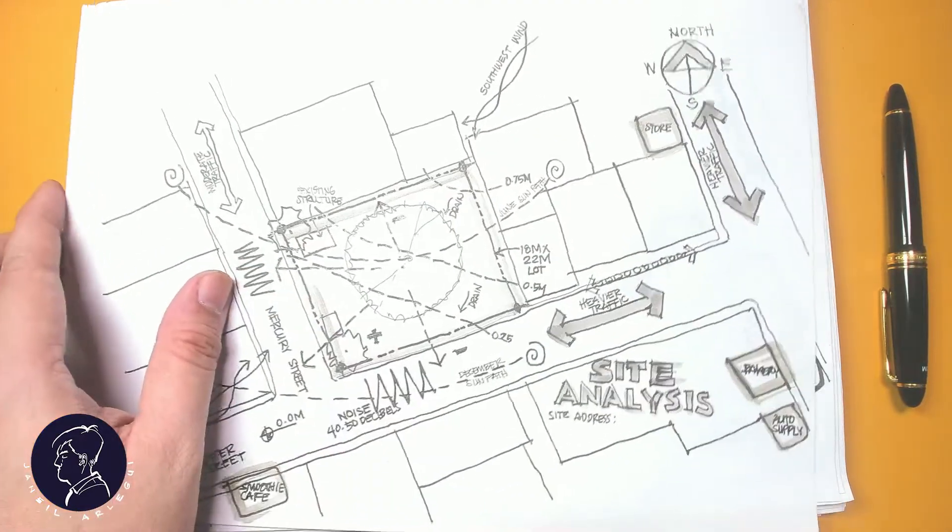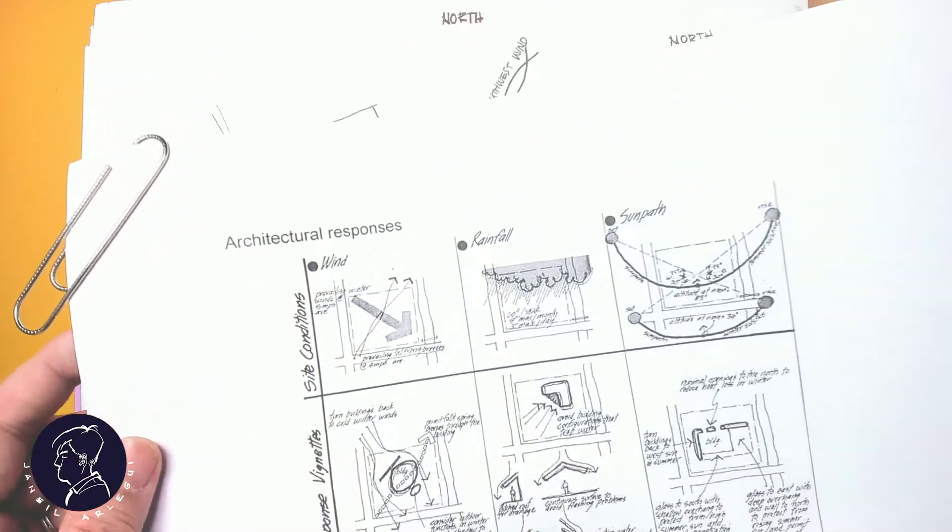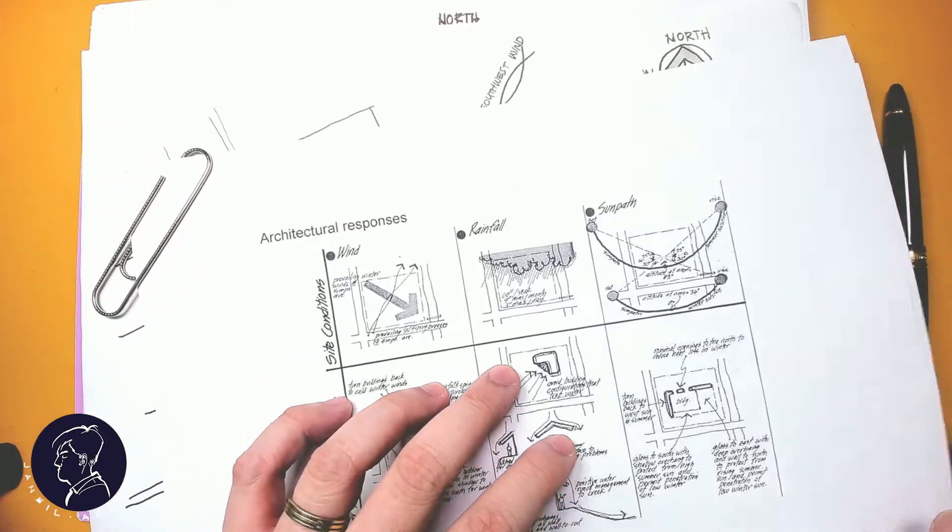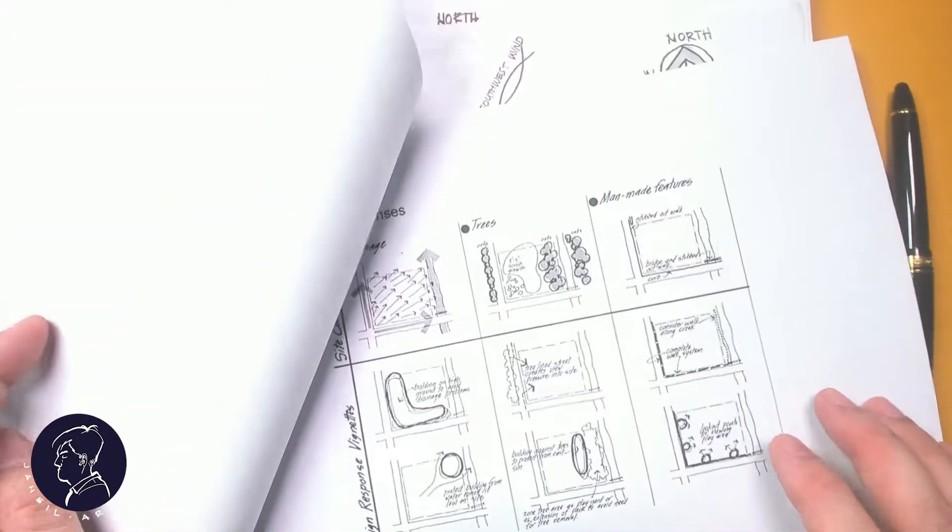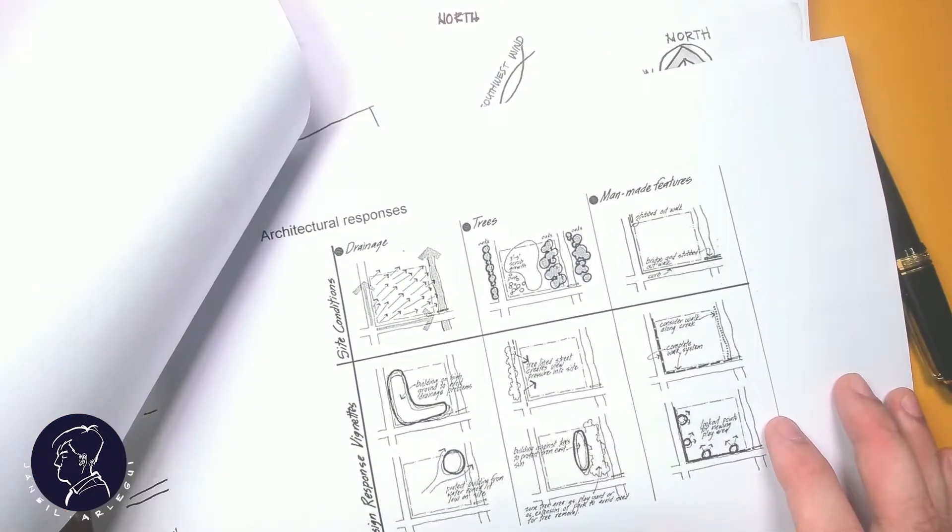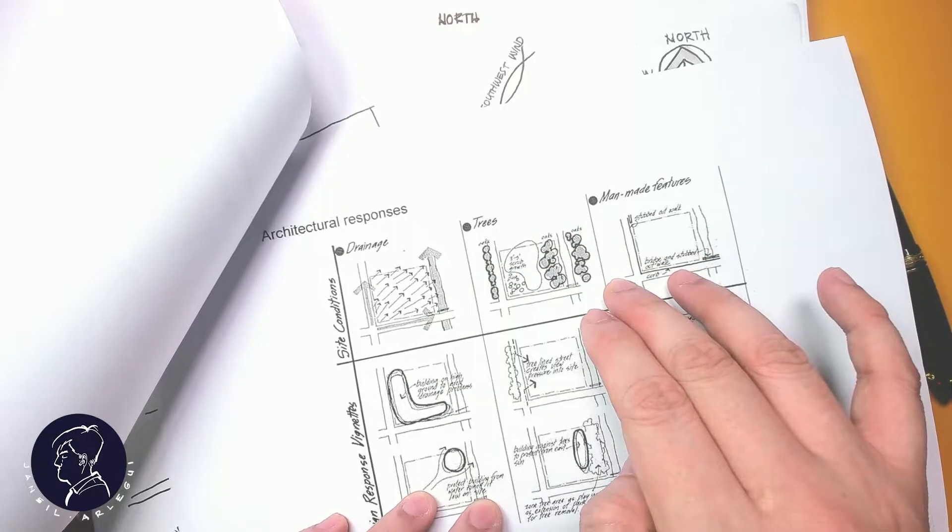For more information on how to do this, you can actually go through Edward White's literature on site analysis. He gives some examples here of really how to symbolize and graphically represent.